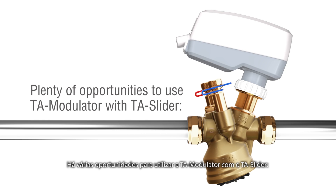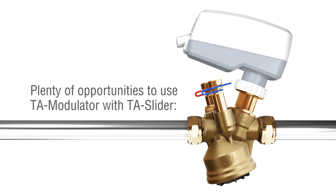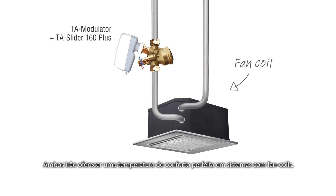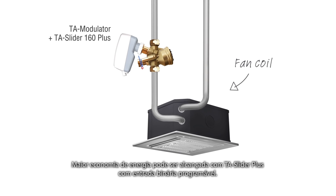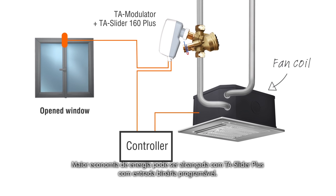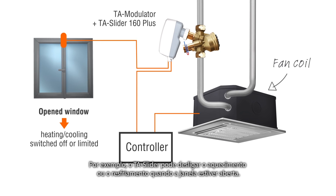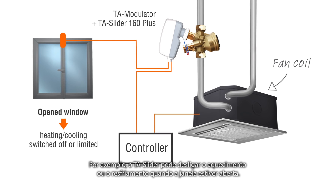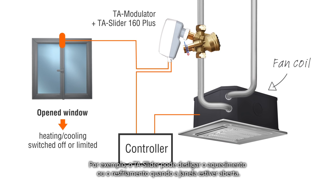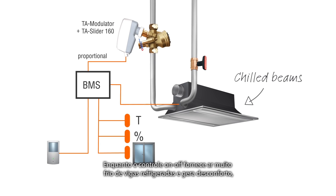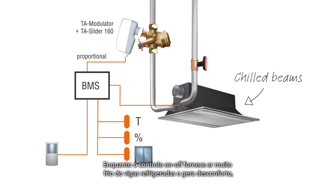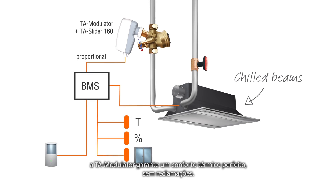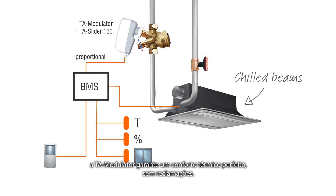There are plenty of opportunities to use TA modulator with TA slider. Both will deliver perfect temperature comfort in systems with fan coils. Higher energy savings can be achieved with TA slider plus with programmable binary input. For example, TA slider can switch off heating or cooling when the window is open. While on-off control delivers air that is too cold from chill beams and creates discomfort, TA modulator guarantees perfect temperature comfort without complaints.